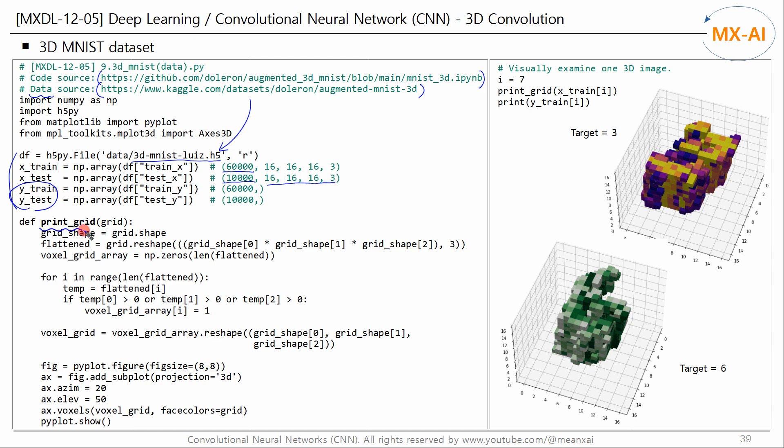We use this function to visualize a 3D MNIST image. This code was taken from this site. The 3D MNIST images are as follows. This image is a 3D representation of the digit 3. And this image is the digit 6.